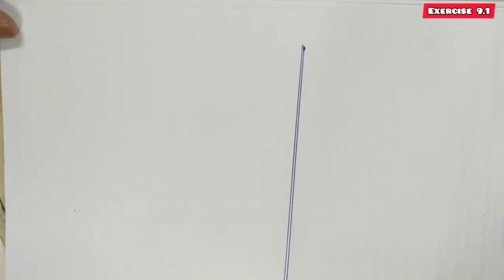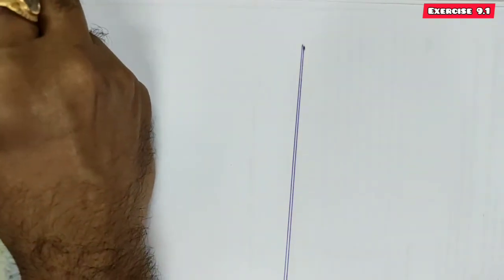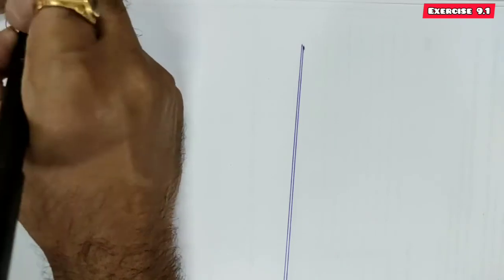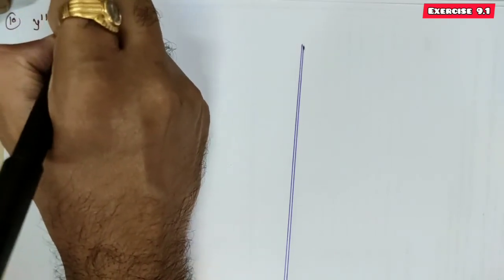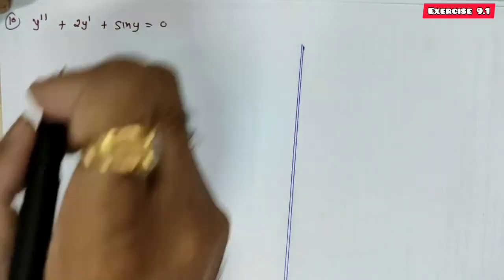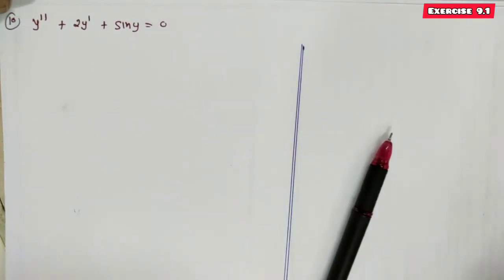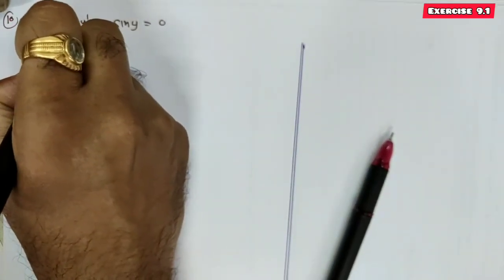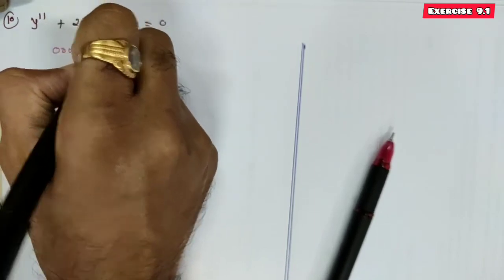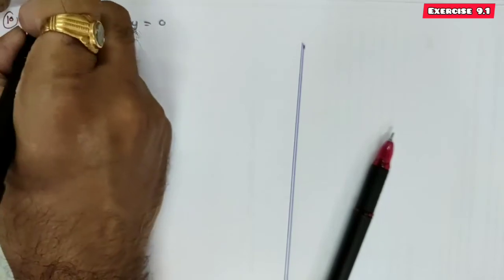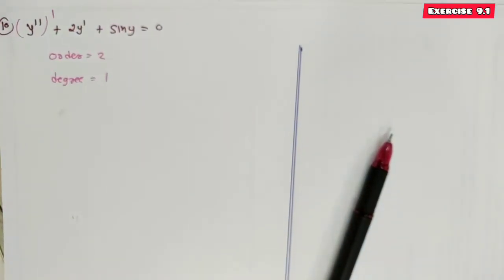Equation 10: y'' + 2y' + sin y = 0. For this equation, order is 2. The highest order derivative has power 1, so degree is 1.